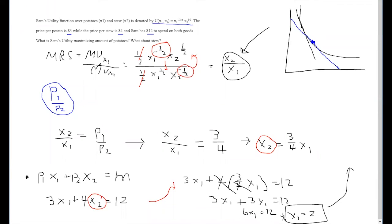In order to find the optimal amount of stew, all we need to do is plug this 2 back into this equation here. This means the optimal amount of x2 is equal to 3 fourths times 2, x2 is equal to 6 fourths, x2 is equal to 1.5.